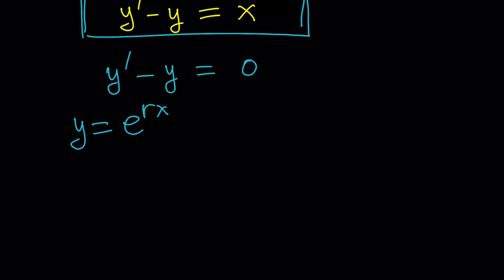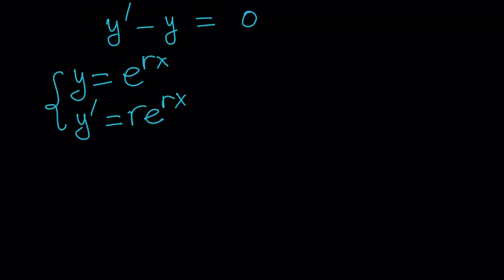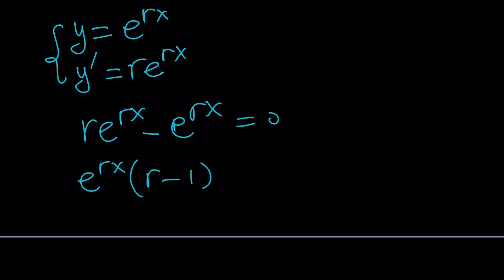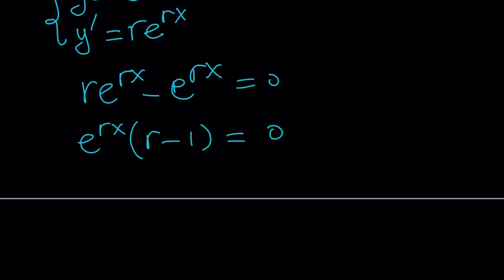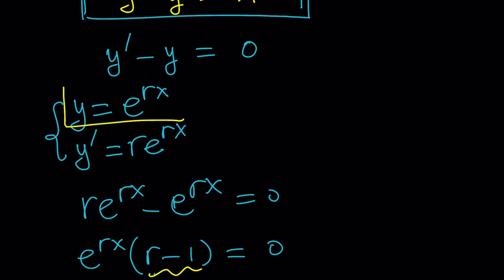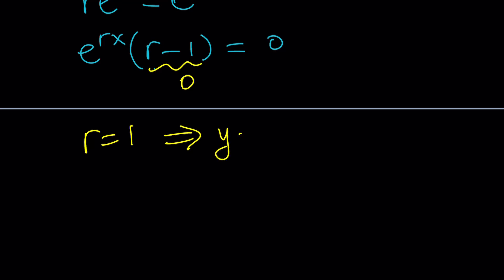Each case is obviously a little different. If you go ahead and replace y with that, y prime is just going to be r times e to the power rx from the chain rule. Let's substitute these into our homogeneous equation. y prime is r·e^(rx) minus y, which is e^(rx), equals 0. We can factor out e^(rx) and get r minus 1. Since e^(rx) cannot be 0, we set r minus 1 equal to 0, giving r equals 1. So y equals e to the power x is a solution.